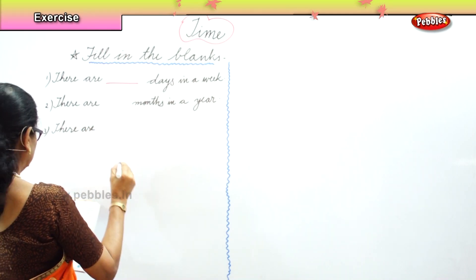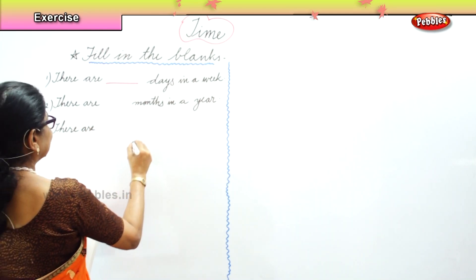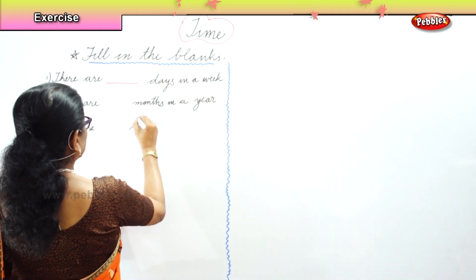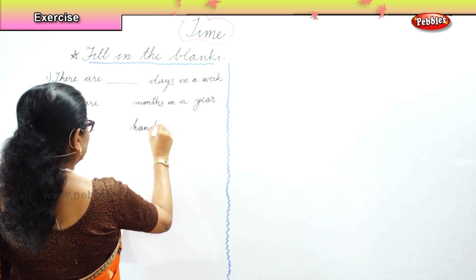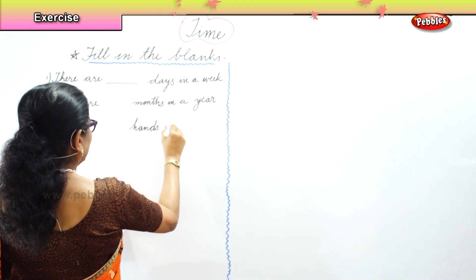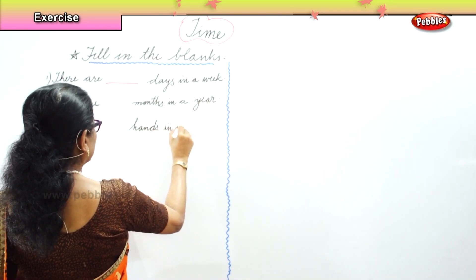Next: there are dash hands in a clock — how many hands in a clock?